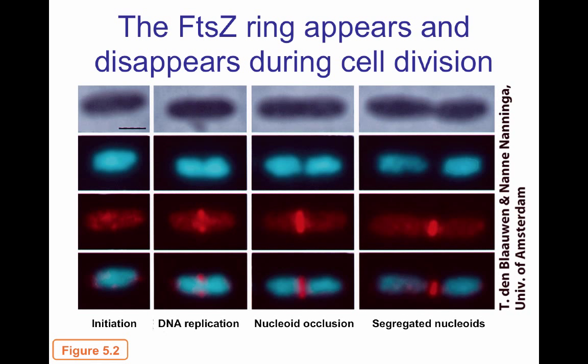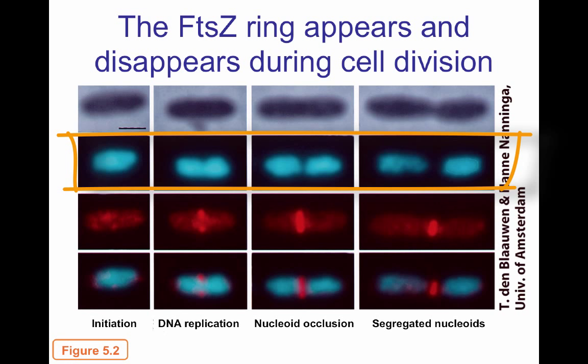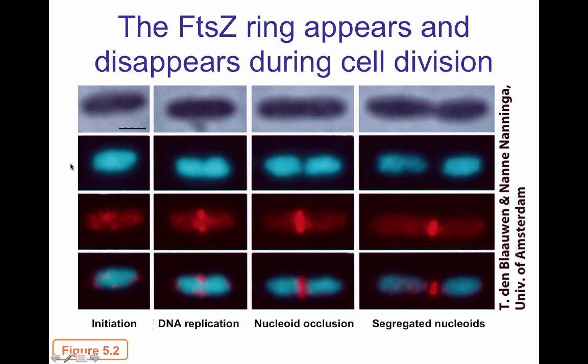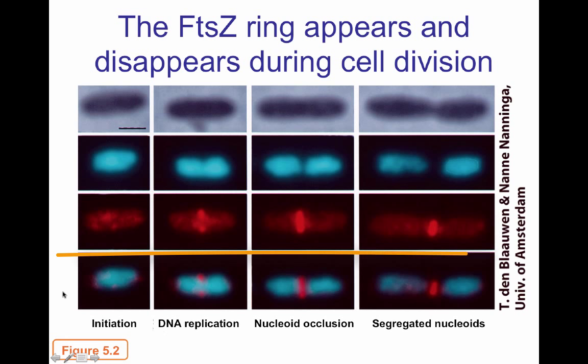The divisome only appears in the center of the cell at the point when the cell is ready for division. This image — figure 5.2 in our textbook — shows a microscopic image in regular optics and two fluorescent images below: one in blue measuring DNA showing the nucleoid as it starts to divide, and one in red showing FTSZ. The lowest row shows the overlap of the blue DNA image and the red FTSZ image.